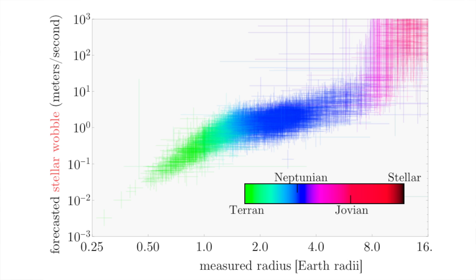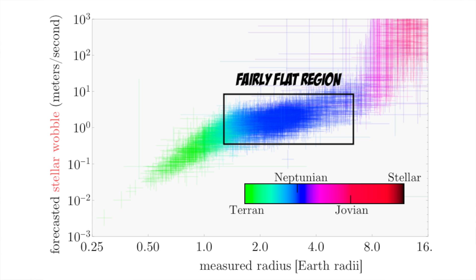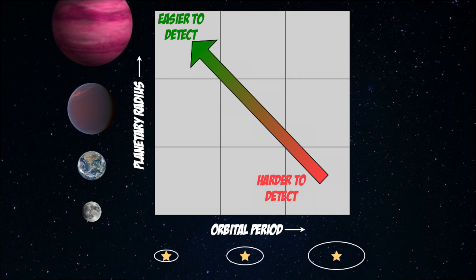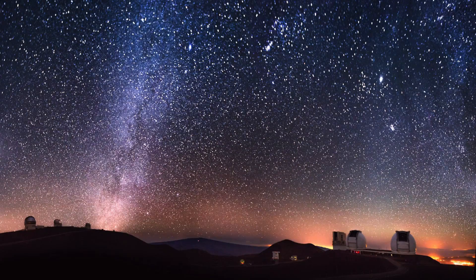Another thing we noticed was that our predictions for the stellar wobbles are more or less the same across the entire range of Neptune-like planets. This surprised us at first because bigger, heavier planets should cause bigger wobbles. It turns out this strange pattern is due to Kepler's observational biases. Smaller Neptunes are harder to detect by Kepler, but if they are at short orbital periods, they can still be detected. Such a short period also boosts the predicted stellar wobble, so the two effects balance out, meaning that all Neptunes end up having similar stellar wobble predictions.